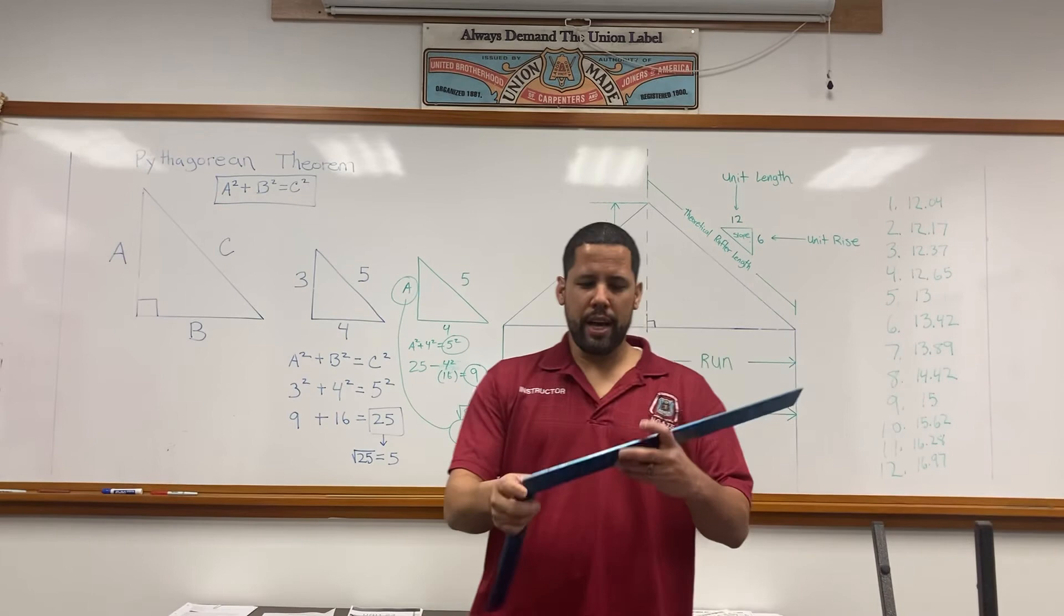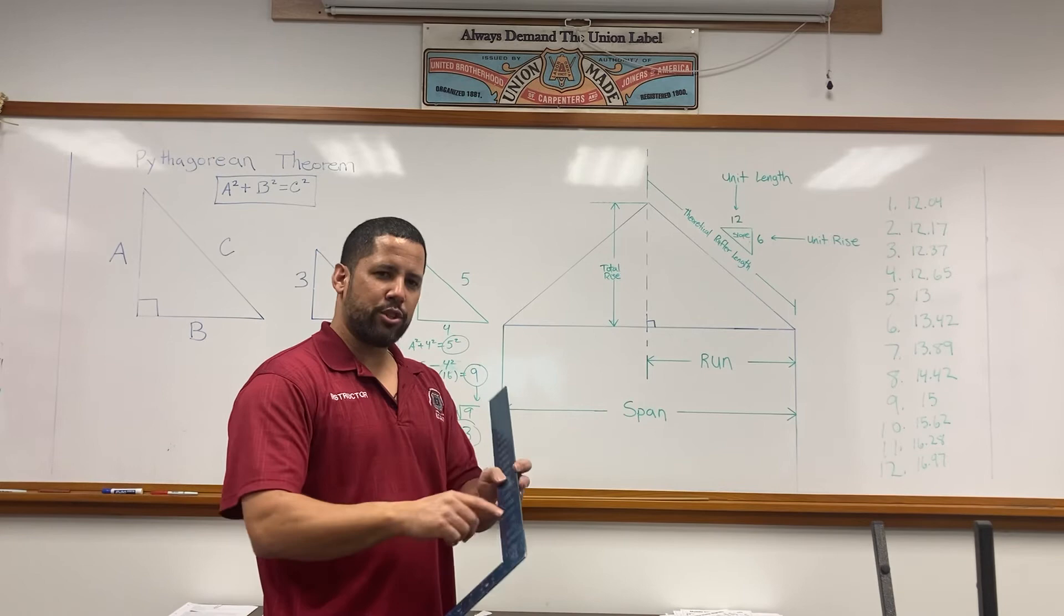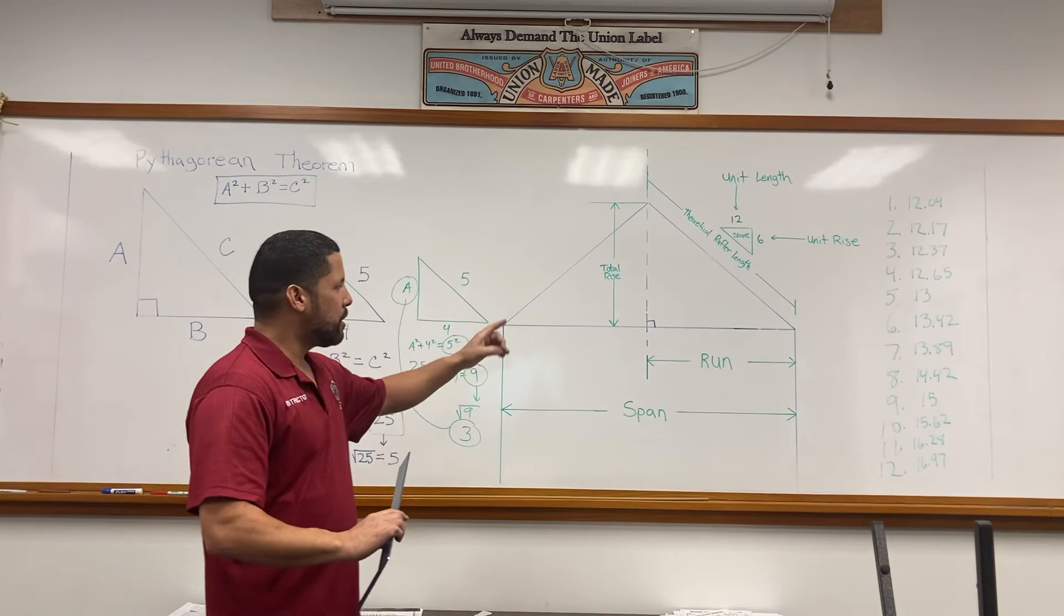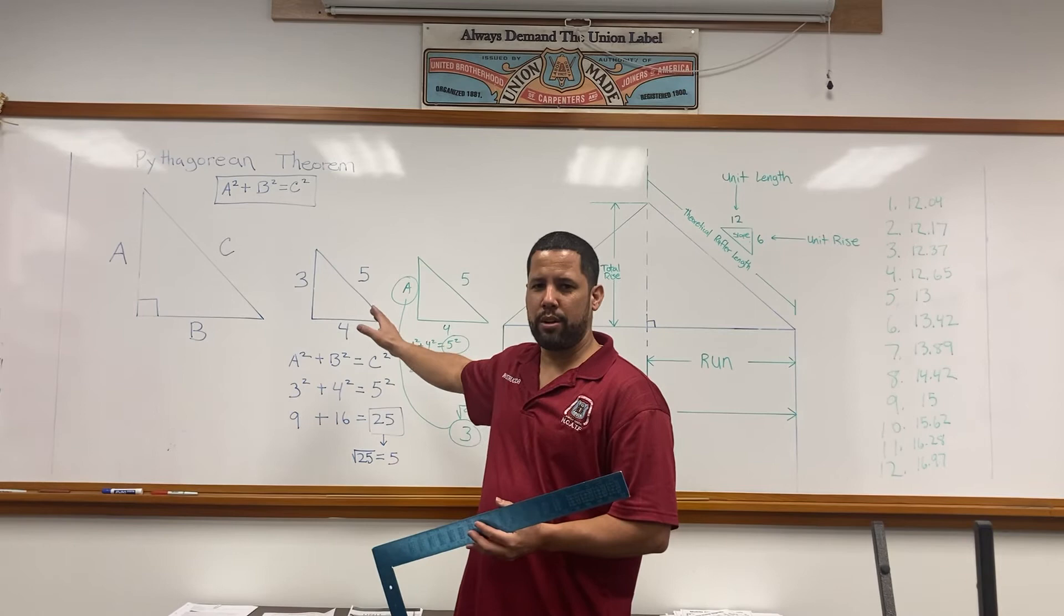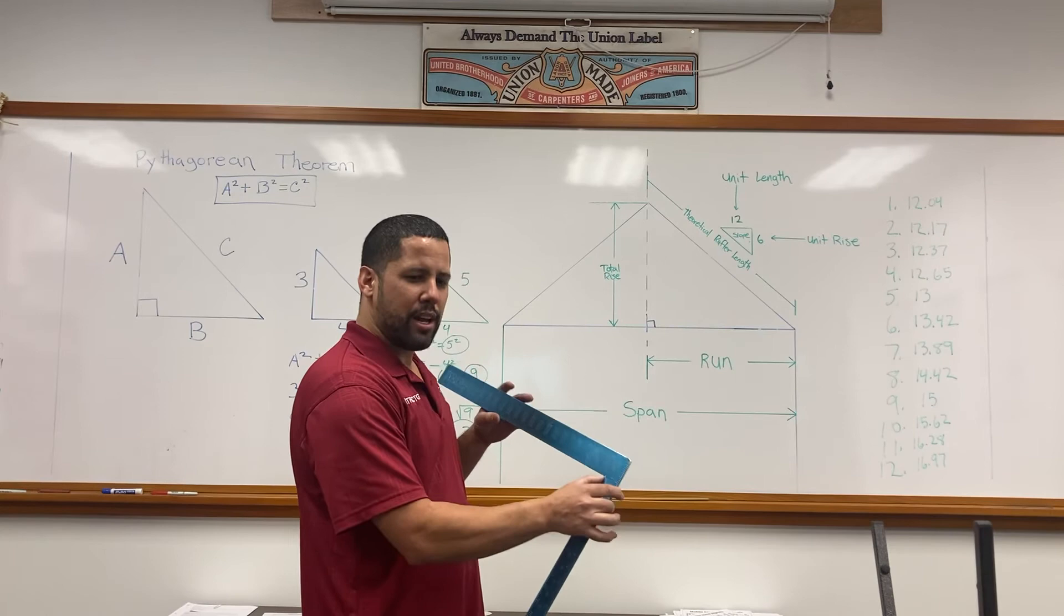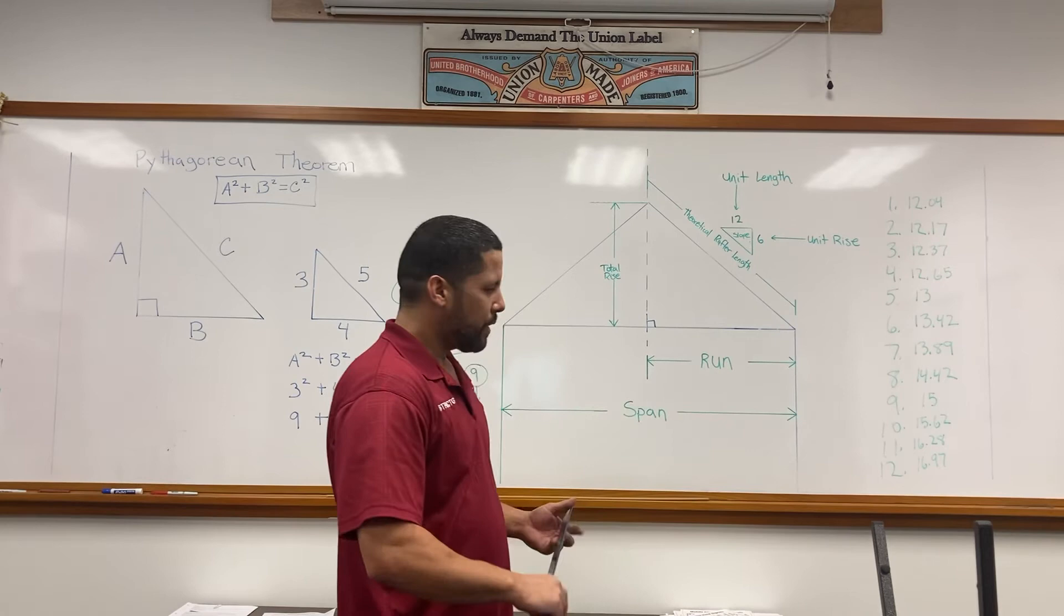See where I'm getting at? This tool has all those calculations already made for you. But just in case you don't have a framing square, you can easily figure out the unit length of a rafter using the Pythagorean theorem. Now that we understand a² + b² = c², we understand where to find the unit length on your rafter according to the pitch of the roof or the slope.